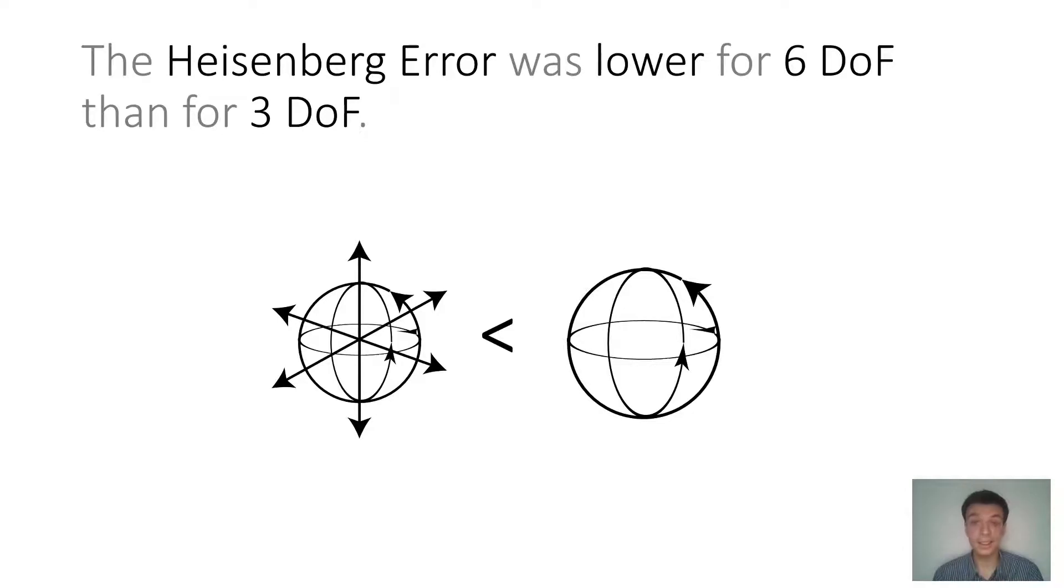We also found surprisingly that six degrees of freedom led to a lower Heisenberg error than three degrees of freedom. This could be explained due to the behavior of our participants, which didn't change between six degrees of freedom and three degrees of freedom when selecting, meaning that participants used their arm during the three degrees of freedom condition instead of just using the wrist.